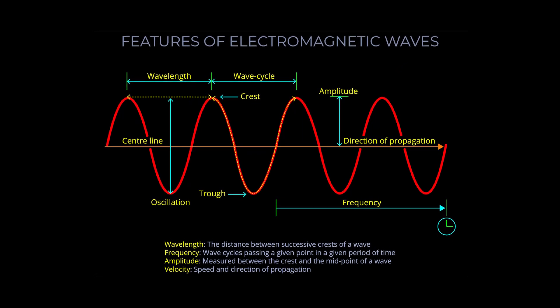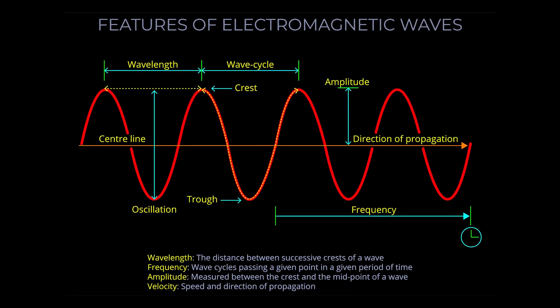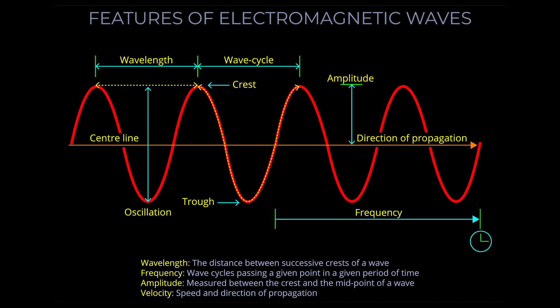Electromagnetic waves, on the other hand, can be blocked or scattered by celestial bodies, gas clouds, and other obstacles in space.